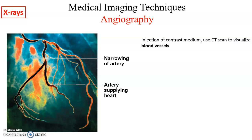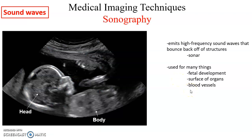Angiography uses x-rays to look at blood vessels. As a CT scan is taken, a dense dye is injected into the bloodstream, coating the inside of blood vessels and making them visible. This allows you to see areas where blood vessels are narrowing abnormally, which may need to be repaired or treated. Sonography uses high-frequency sound waves sent into the body — for example, into the belly of a pregnant woman. The sound waves bounce off internal structures such as the fetus, allowing you to see their surface. This is very safe; unlike x-rays, sound waves are not damaging, so sonography is used to see fetal development, organ surfaces, and blood vessel surfaces.